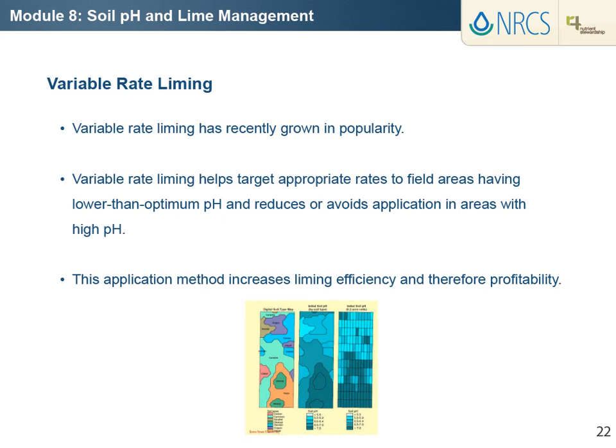Application of lime using variable rate technology has recently grown in popularity. Variable rate applications help growers avoid under-applying liming products in field areas having lower than optimum pH and reduce or avoid application in areas with high pH that do not need lime application. This methodology can greatly aid in correct field placement and application rate of lime materials, especially in highly spatially variable fields, which increases liming efficiency and therefore profitability.